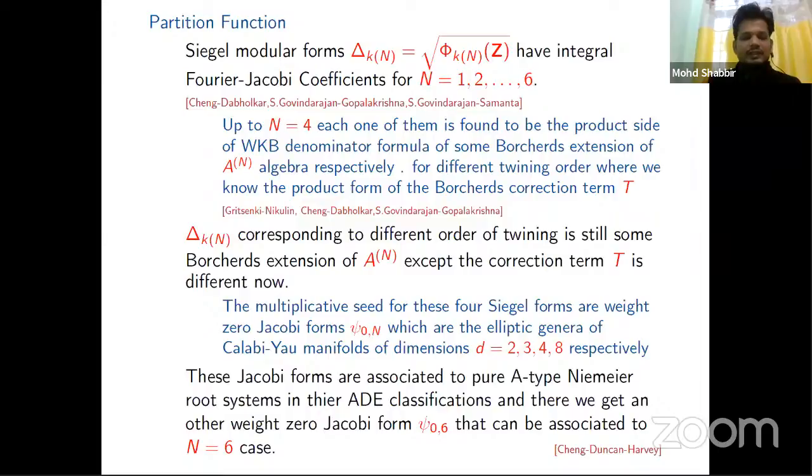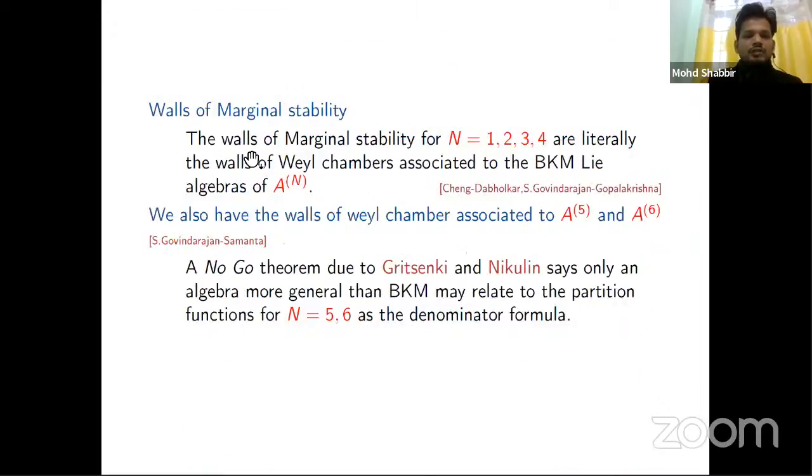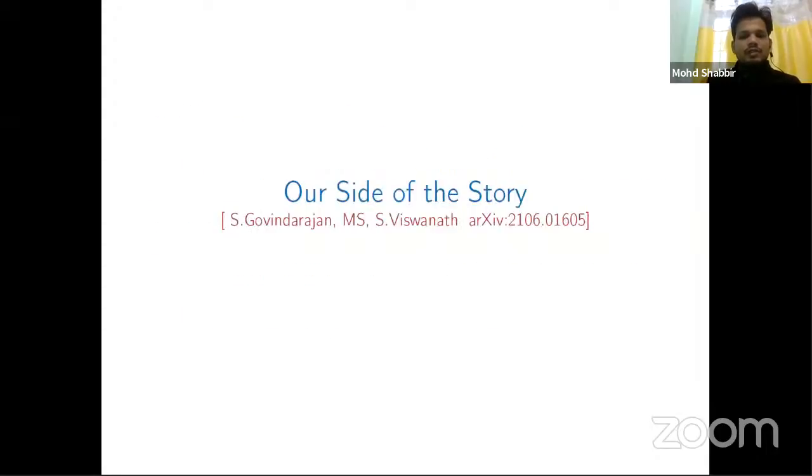Now the multiplicative seed for these four Siegel modular forms—size zero to be forms of size—which are the elliptic genera of Calabi-Yau manifolds for basically N = 2, 3, 4, and 8, respectively. The Jacobi forms are associated with root lattices—the root systems in their ADE classification. We get another weight zero to be forms for size zero of N = 6 that can be associated to the A_N + 6 case. The walls of marginal stability for N = 1, 2, 3 are literally the walls of Weyl chambers associated to the VKMB algebra. We also have the walls of Weyl chambers associated to A_5 and A_6. A no-go theorem due to Gritsenko and Nikulin says only an algebra more general than VKM may relate to the partition functions for N = 5, 6 as the denominator formula. This is the work we're trying to do—that generalized version of the algebra.